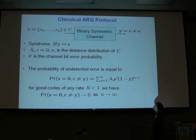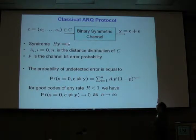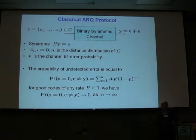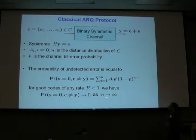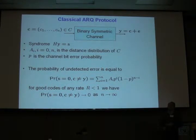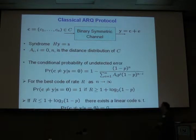What is confusing about this is that if you make a simple analysis of this expression, you will see that you can use any good code C of any rate smaller than 1, but as close to 1 as you wish — it could be 0.9, it could be 0.99 — as soon as you make the code length sufficiently long, you will obtain the probability of undetected error as small as you wish. This is misleading because it looks like we can use any code of rate as close to 1 as possible, and 1 is the maximum possible rate. So I suggested to consider a different probability.